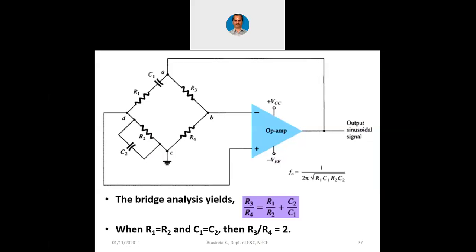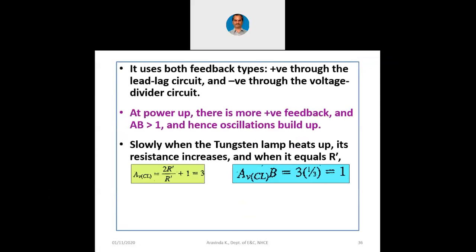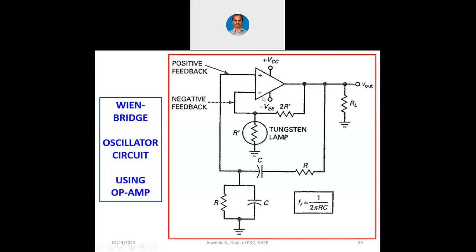Here we were discussing the Wien bridge oscillator itself, in the formation of which the Wheatstone bridge is used, because at the input the same circuit can be represented as a Wheatstone bridge. This is not a new circuit; it is the same Wien bridge oscillator written in a different fashion. You can see the amplifier with the feedback network at the minus terminal and a feedback network at the plus terminal, along with the load resistance. So the same circuit can be written as a Wheatstone bridge circuit.